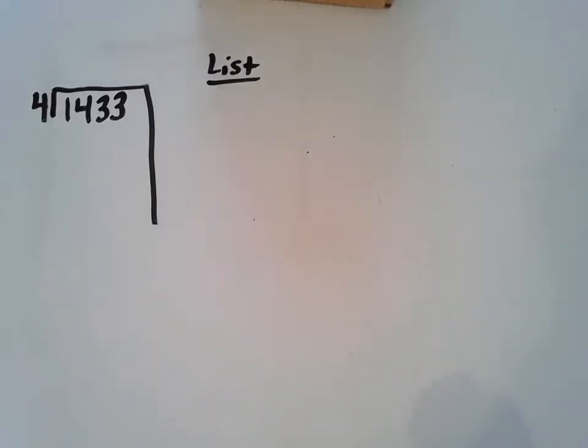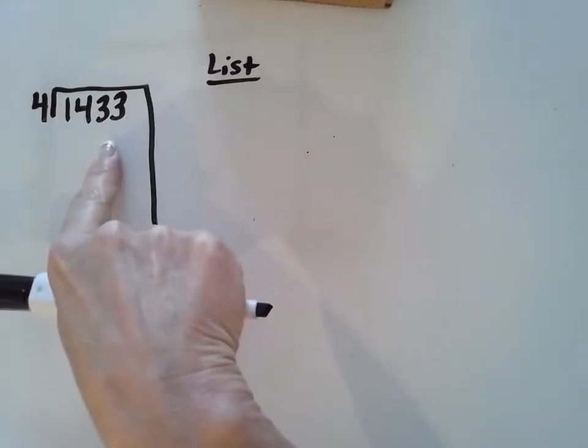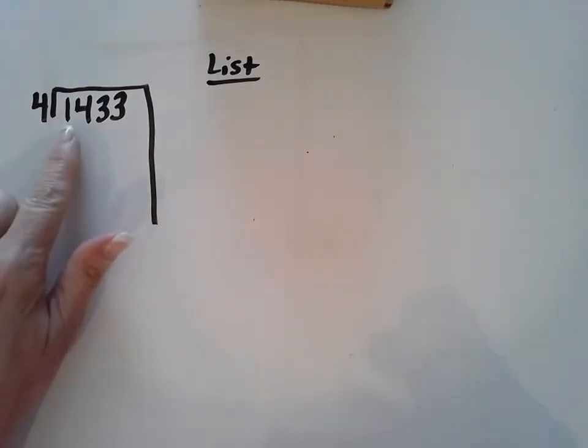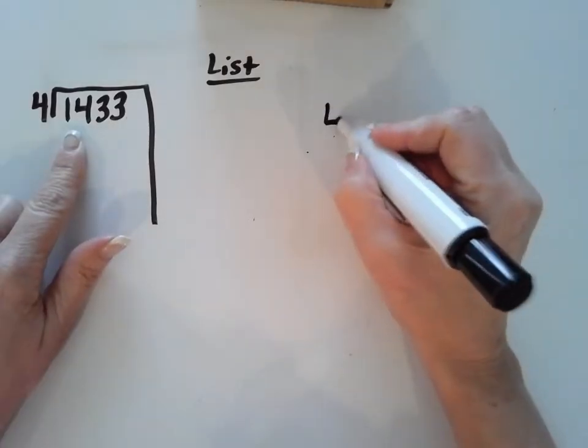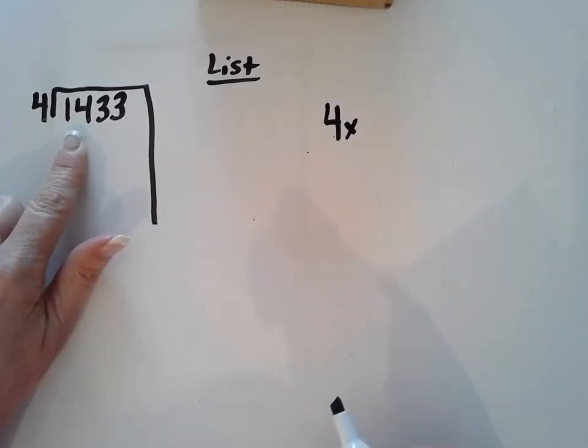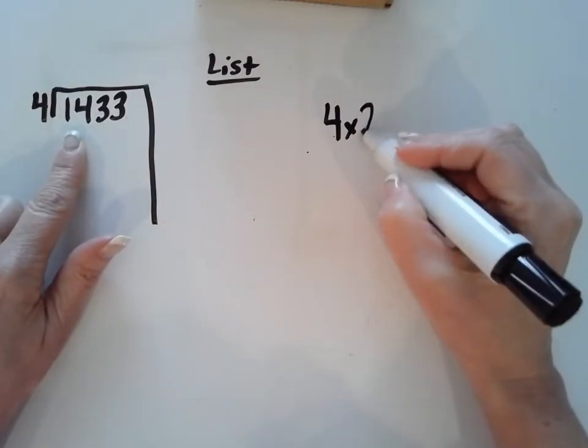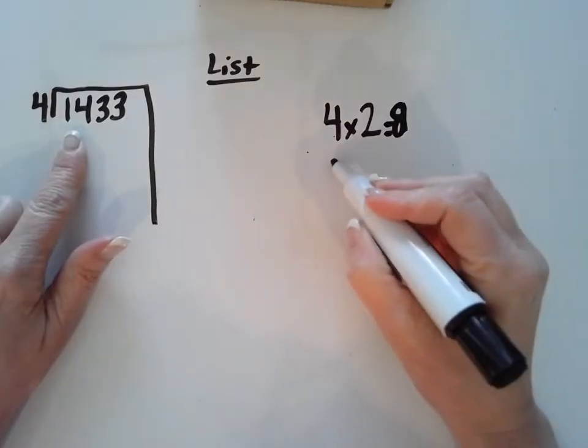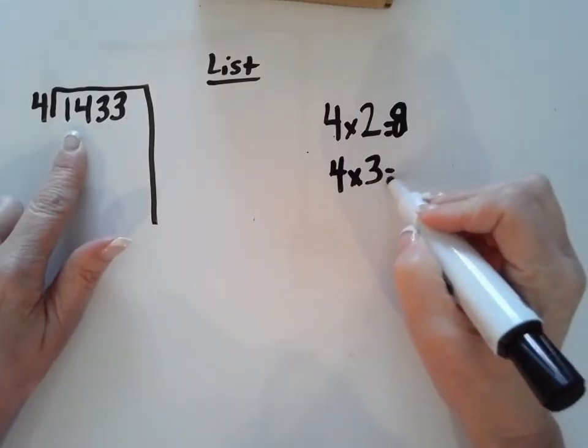The first thing that I want to do is I notice that my numbers are in the thousands. However, just to get me started, I'm only going to look at the first two digits right here, and I'm going to use my divisor and create some friendly numbers. The way I'm going to do that today is I'm going to think about how many times can 4 get close to 14. In other words, what can I multiply 4 by and get close to 14? Well, I know 4 times 2 equals 8, and I know that 4 times 3 equals 12.